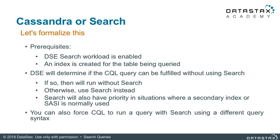Let's go back and review some very important points around Cassandra, DSC Core, and search. To be able to use search, you need to: one, have DSC Search workload enabled; and two, have an index created for the table being queried, more specifically on the columns that you are trying to query. DSC will determine if the CQL query can be fulfilled without using search at all — if so, it will run without search; otherwise, use search instead.